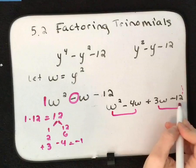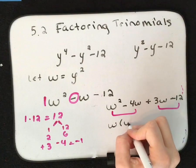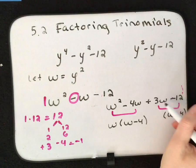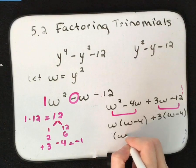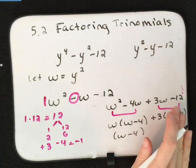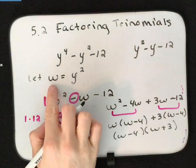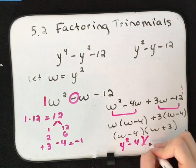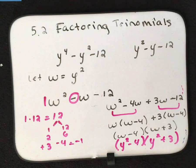Doing our grouping: w squared and negative 4w have w in common, pulling out w leaves w minus 4. The remaining group is 3w and 12 — pulling out 3 gives 3 times (w minus 4). What's in common is w minus 4, and what's left is w plus 3. But we didn't start with w — w was replacing y squared. Substituting back, the factored form is (y squared minus 4)(y squared plus 3). We used substitution and the AC method together to factor this one down.